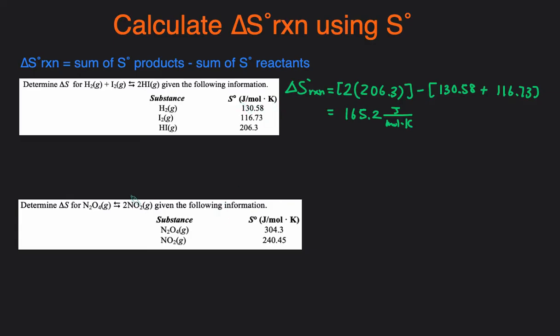Let's take a look at the next one. We're calculating, once again, the delta S of this reaction. We're given the standard entropy values of the reactants and products, so we just plug it into the equation: products minus reactants.